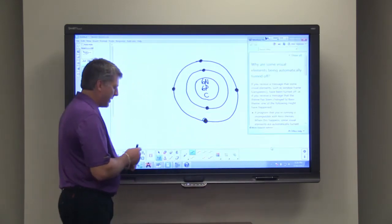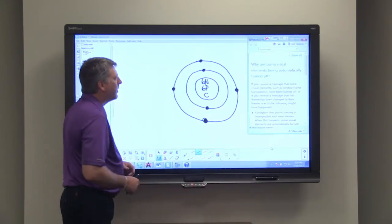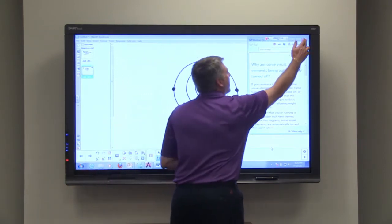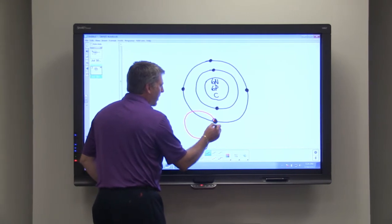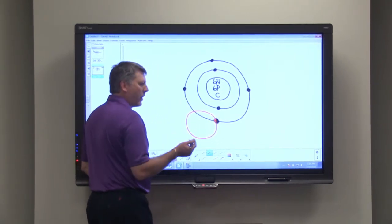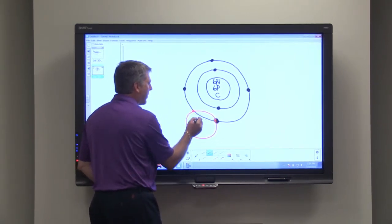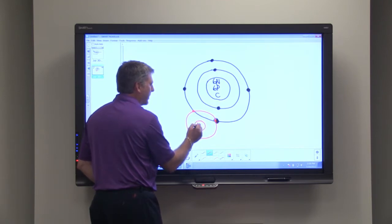So the interesting thing about these four valence electrons is carbon will always form four covalent bonds, and I'm just going to draw in some hydrogen atoms here.